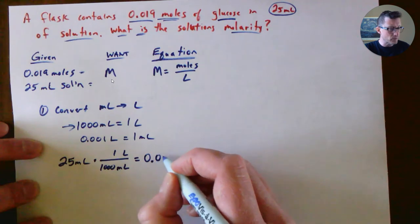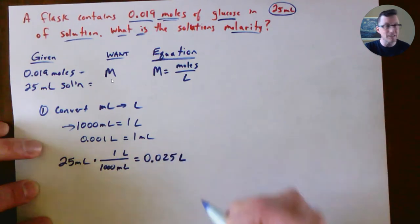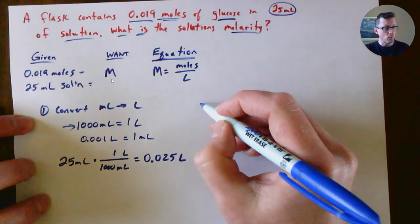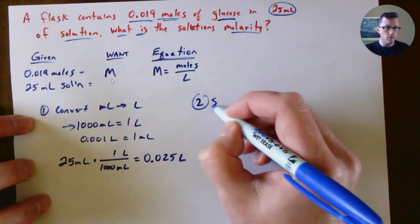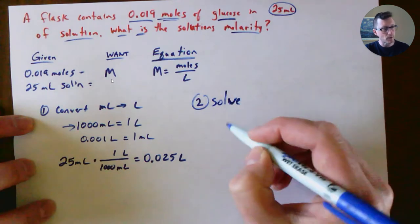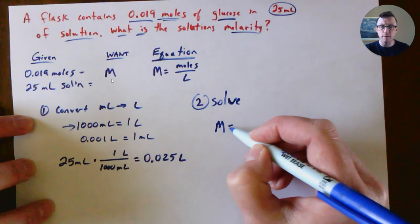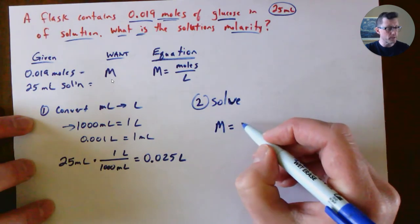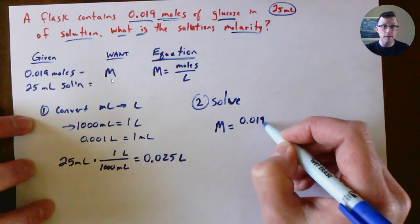Now we can go back to our equation and solve for that. We're looking for molarity. The moles was already given to me, 0.019 moles.